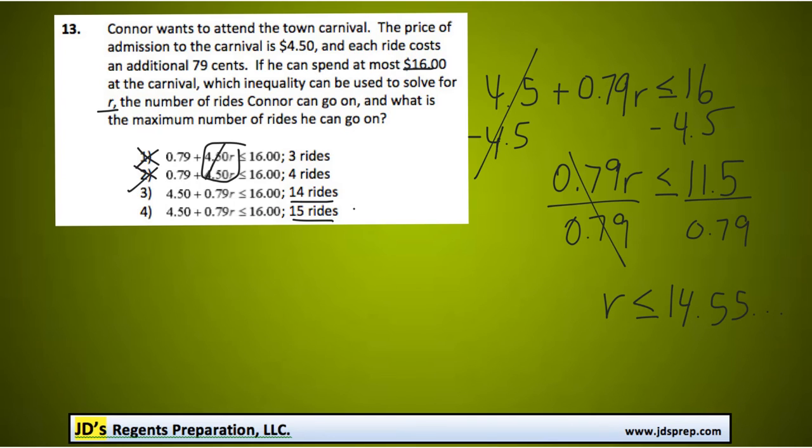So that means that the number of rides that Connor can go on is less than or equal to 14.55. Obviously, we're talking about a number of rides, so it has to be the nearest whole number. But we're not going to round up to 15, because 15 is not less than or equal to 14.55. So the number of rides that you can do is 14 at the most. 15 is not quite enough there.